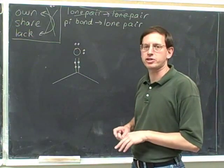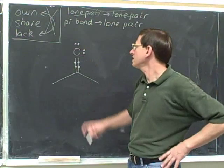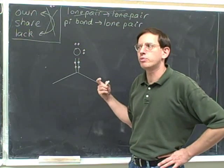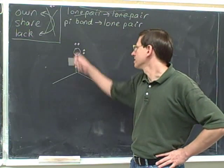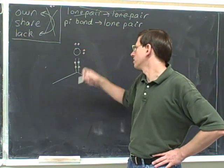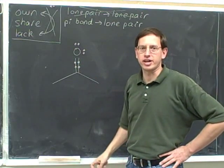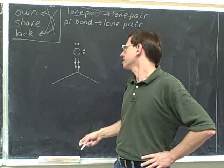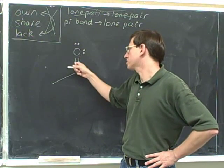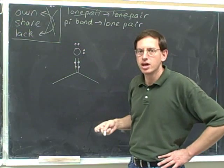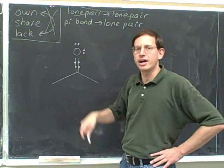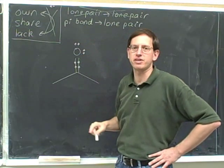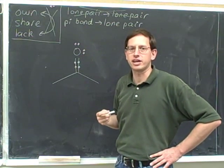We've drawn all the pairs of electrons around the oxygen. For purposes of the octet rule, we treat electrons that are being shared the same way as electrons that are being owned. The total number of electrons either owned or shared around this oxygen are one, two, three, four, five, six, seven, eight — so it's not exceeding the octet rule.